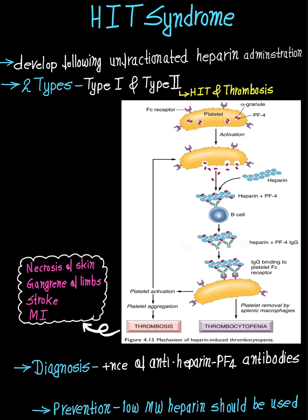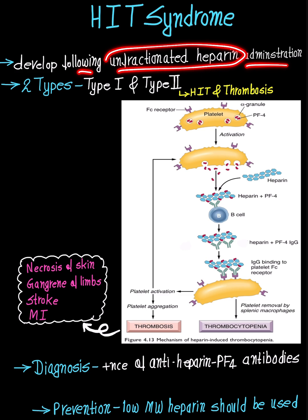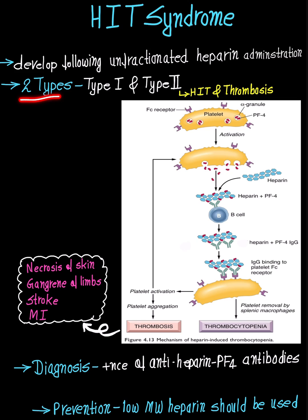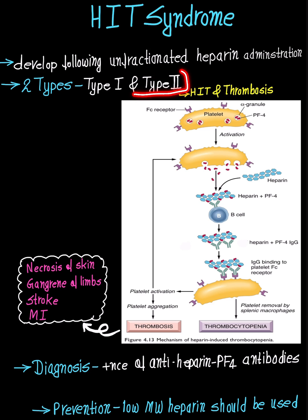Heparin-induced thrombocytopenia, or the HIT syndrome, is a condition which develops following administration of unfractionated heparin. It is of two types: type 1, which is associated with mild thrombocytopenia, and type 2, which is associated with thrombosis. Type 2 is clinically significant and is also known as heparin-induced thrombocytopenia and thrombosis.